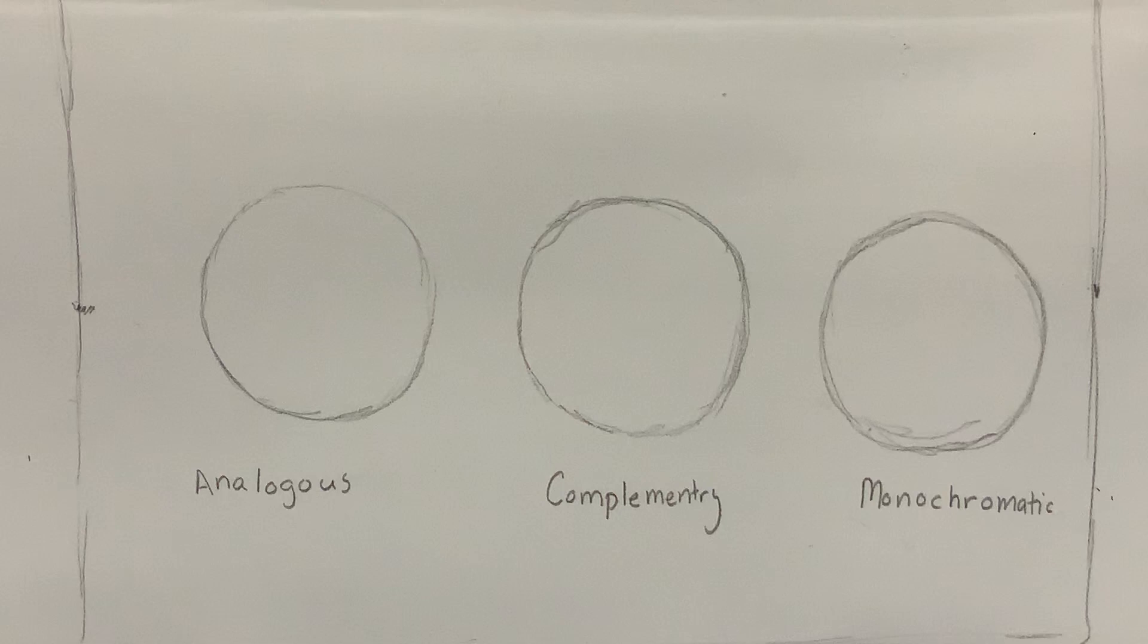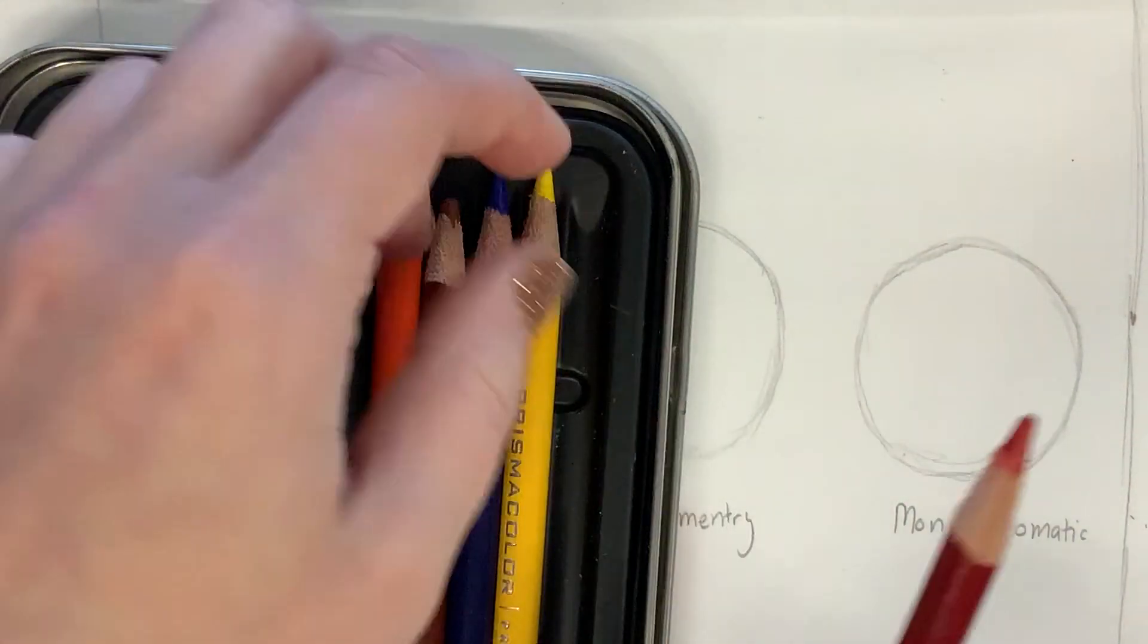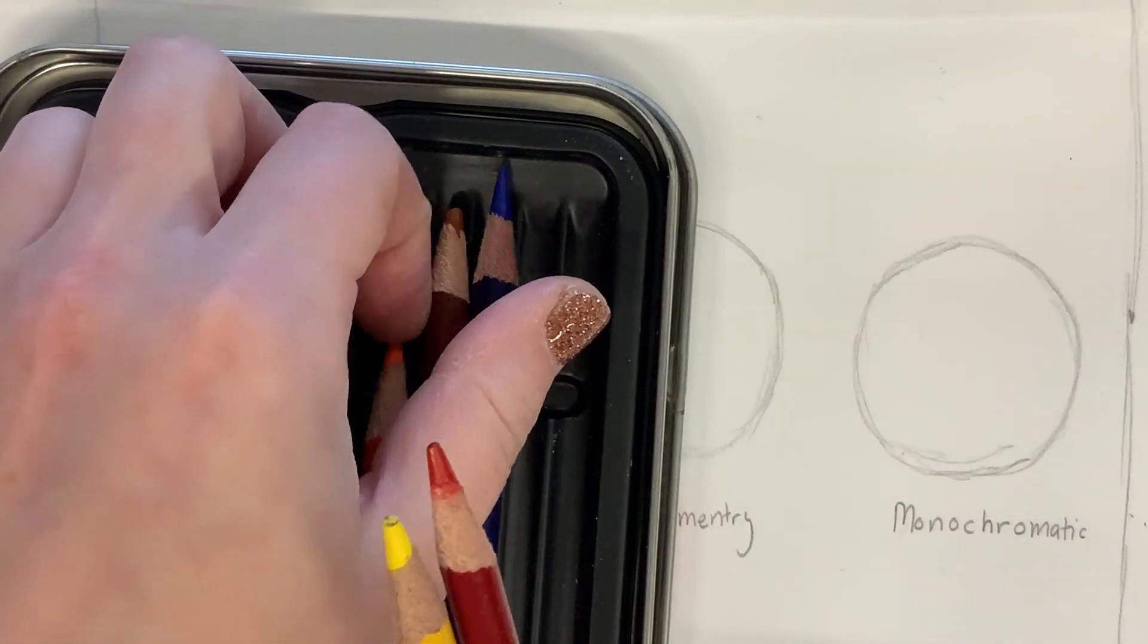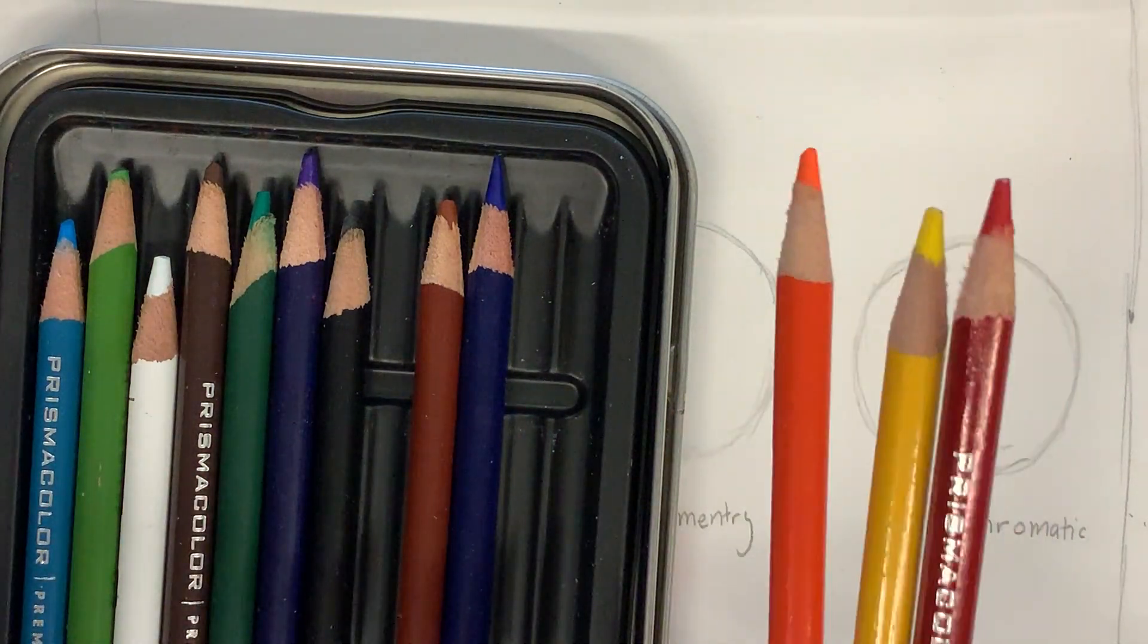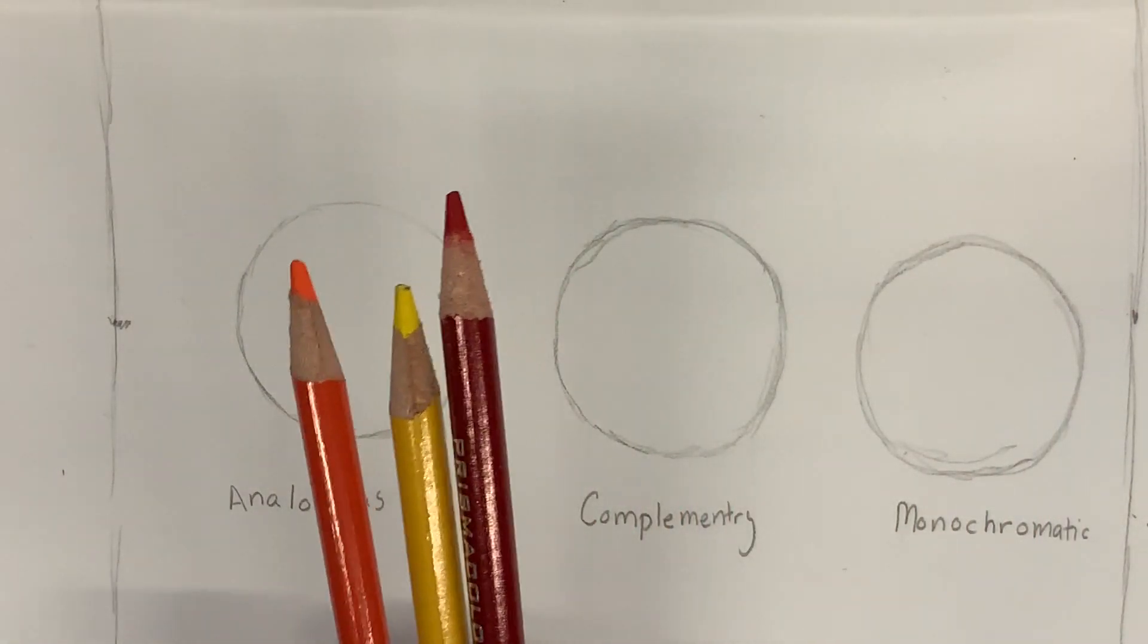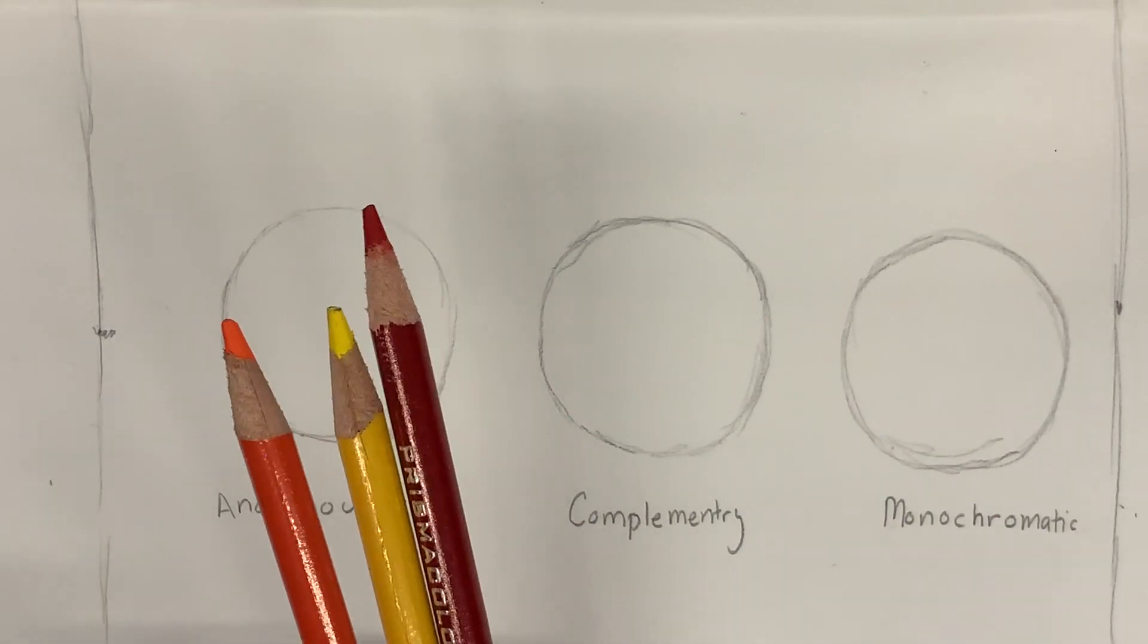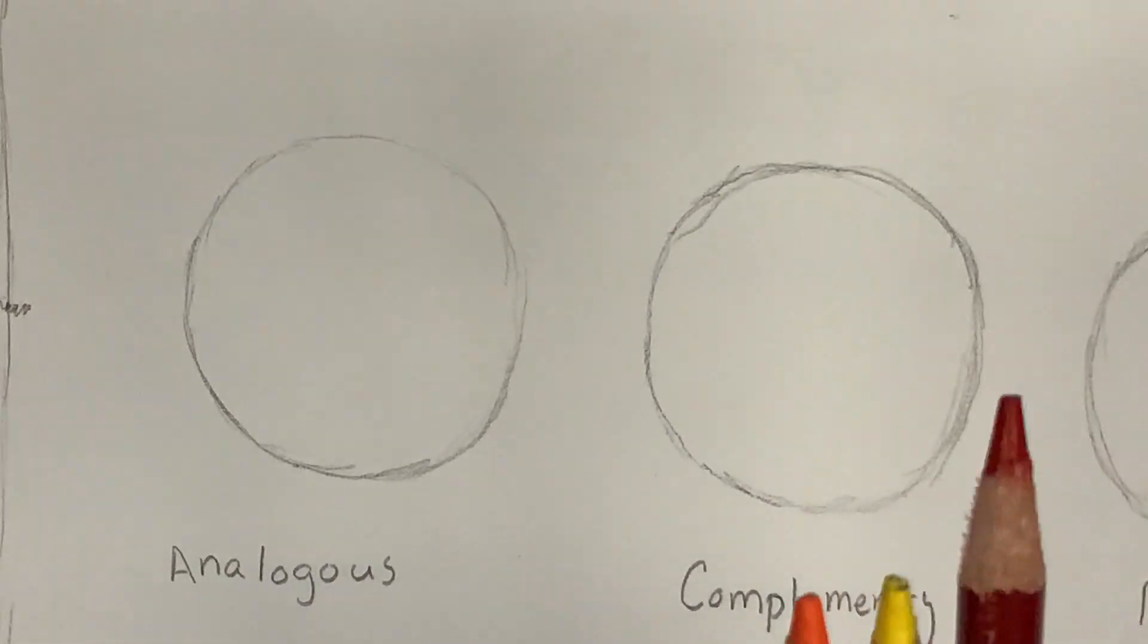So, using my color pencils, I'm going to get my red, yellow, and orange out. And these will be the colors that we use. I could probably even go for a little red-violet. But we'll see what we're working on.